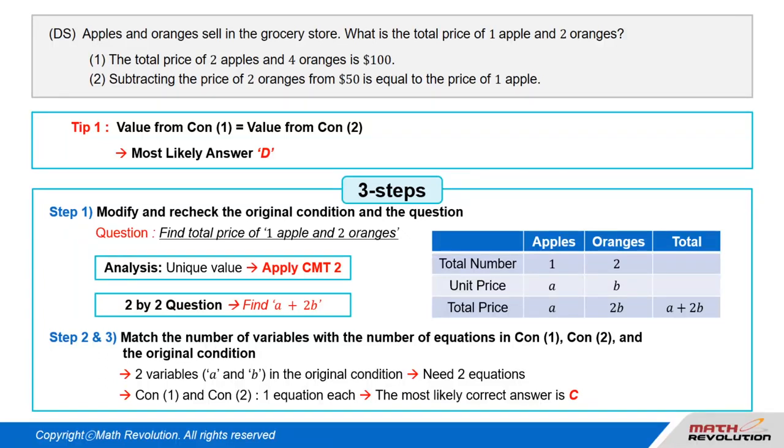From the original condition, we have two variables, A and B. To match the number of variables with the number of equations, we need two equations. Since condition 1 and condition 2 will provide one equation each, C would most likely be the answer.